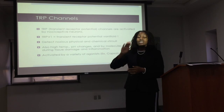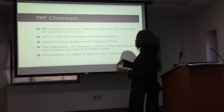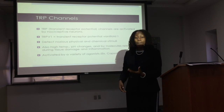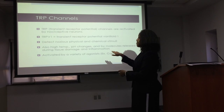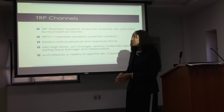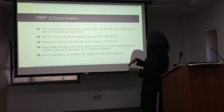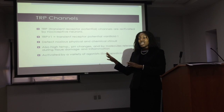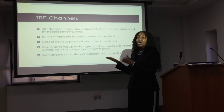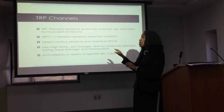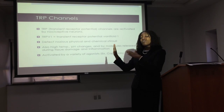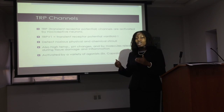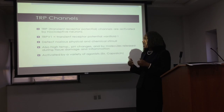TRP V1 actually detects noxious physical and chemical stimuli. Keep in mind, TRP channels in general deal with pain. This one specifically is very sensitive to high temperatures, pH changes, as well as the molecules that are released during tissue damage and inflammation. These are the channels involved in the perception of pain, so if you can inhibit or slow down the activity of these channels, you can reduce pain and inflammation.